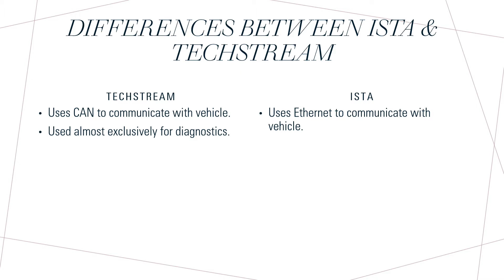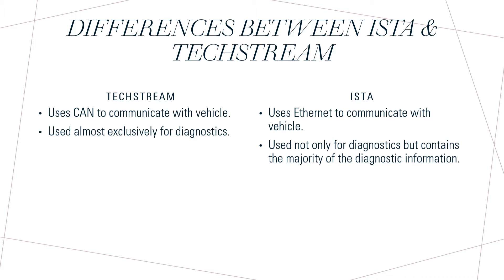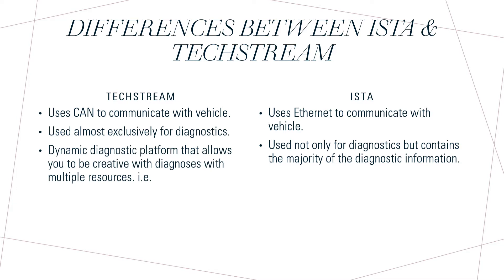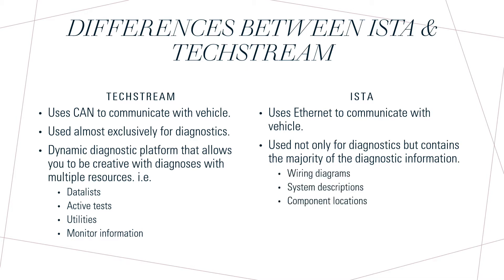TechStream is used almost exclusively for diagnostic purposes only. ISTA, on the other hand, not only communicates with the vehicle for diagnostic information, but the majority of the diagnostic information is on ISTA as well — including wiring diagrams, system descriptions, and component locations, all part of the program. TechStream is a very dynamic diagnostic platform that allows you to be creative with diagnosis using data lists, active tests, utilities, and monitor information. However, with ISTA, all of that information is built into the guided diagnostic test plan.